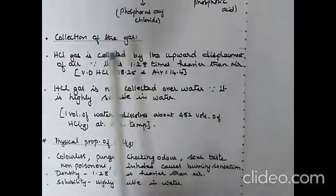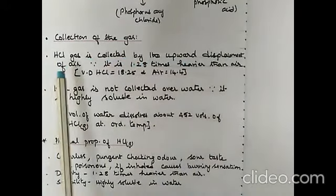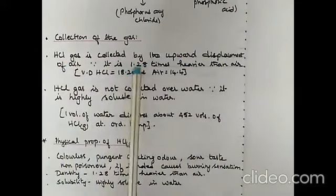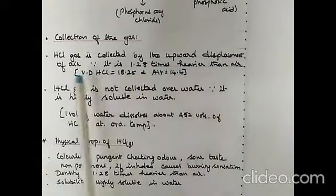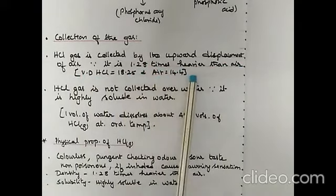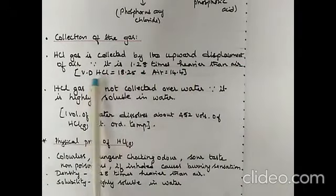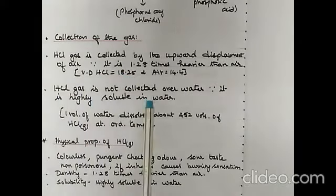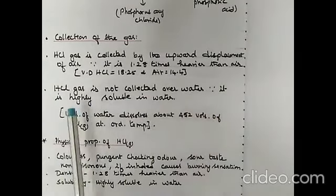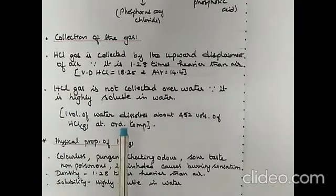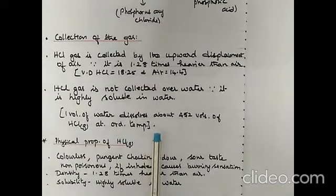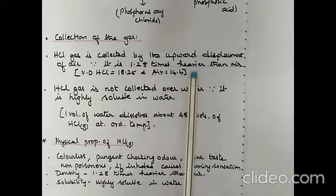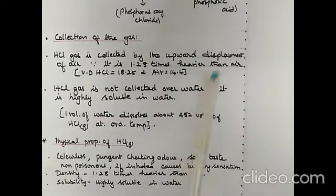Hydrogen chloride gas is collected by upward displacement of air because it is 1.28 times heavier than air — vapor density of HCl is 18.25 and that of air is 14.4. It is not collected over water because it is highly soluble in water: one volume of water dissolves around 452 volumes of HCl gas at ordinary temperature.